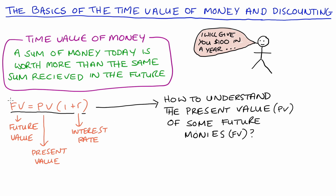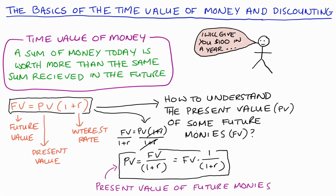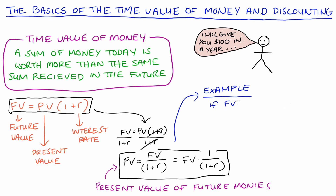It's pretty easy to find that relationship. We know FV equals PV times one plus r, so if we just divide out one plus r we get: PV equals FV divided by one plus r. It's also useful to write this as FV times one over one plus r. As an example, if our future value is 12.50 and the interest rate is 0.25, then PV equals 12.50 divided by 1.25, which equals ten. That's exactly the relationship we had before, just from a different perspective.